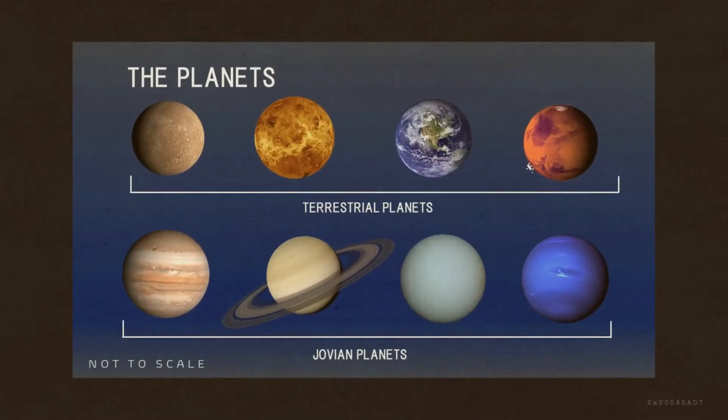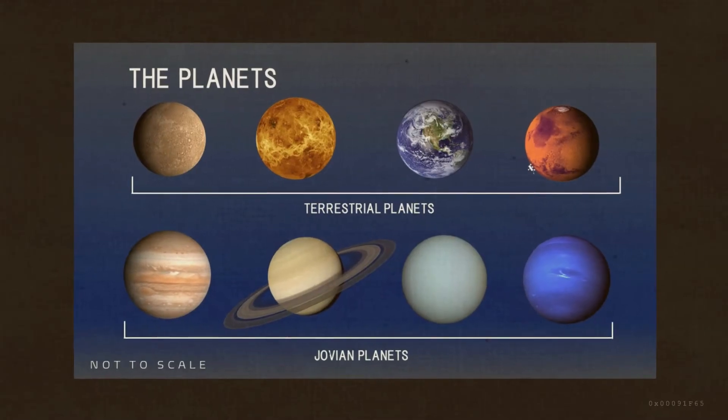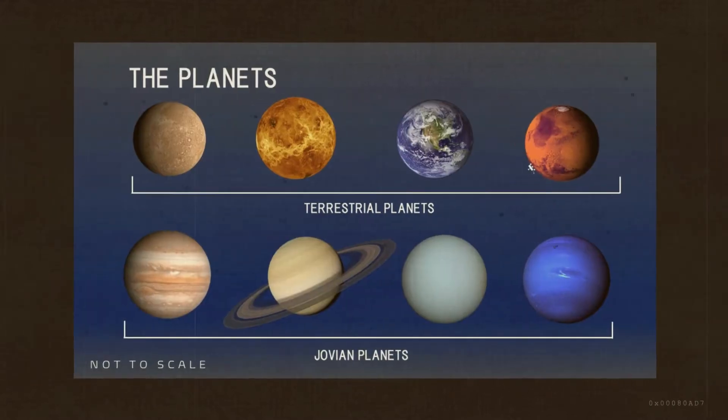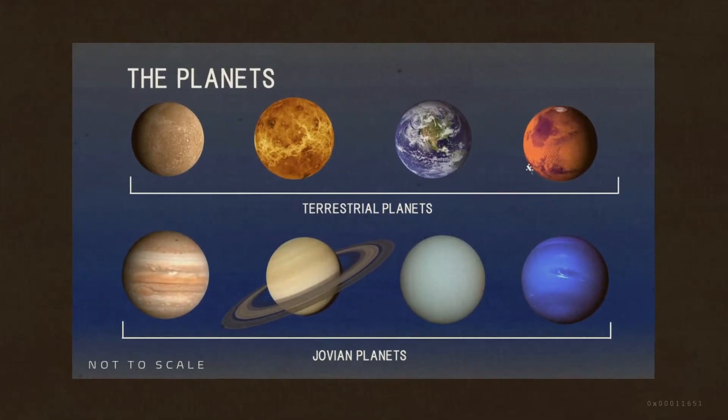There are eight planets in our solar system. They are categorized into two classifications. First is the terrestrial planets, and the second one are called the Jovian planets.